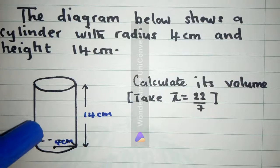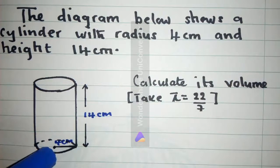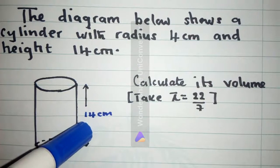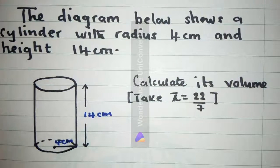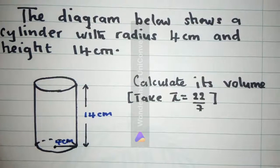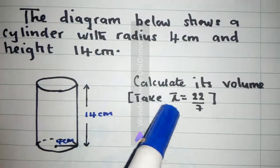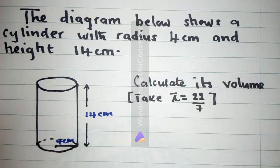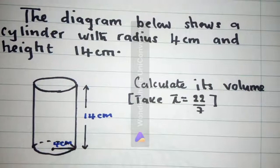We have been given the cylinder over here and the radius of the cylinder is 4 cm. The height is 14 cm where we are asked to find or to calculate the volume and we take pi as 22 over 7.